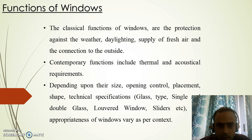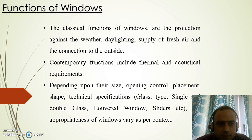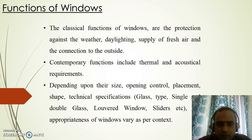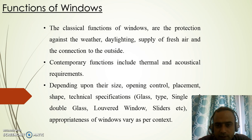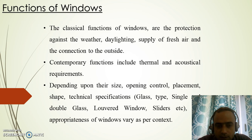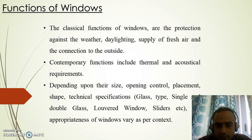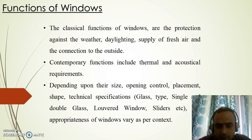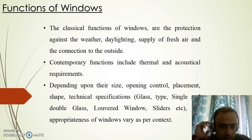This lecture covers various aspects of windows. The classical functions of windows are protection against weather, daylighting, supply of fresh air, and connection to the outside. Contemporary functions also include thermal and acoustical requirements. Depending upon size, opening control, placement, shape, and technical specifications — such as double glass, louvered windows, and sliders — their appropriateness can be judged based on context.